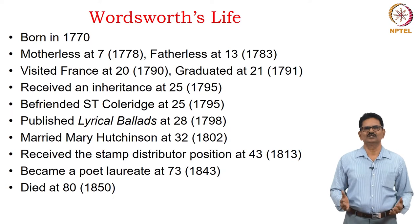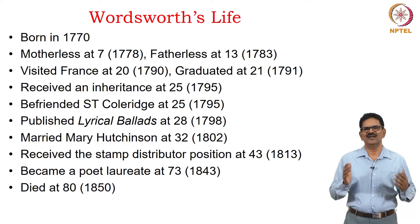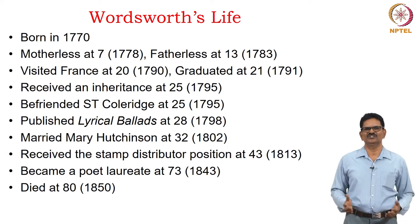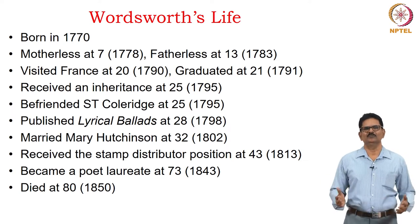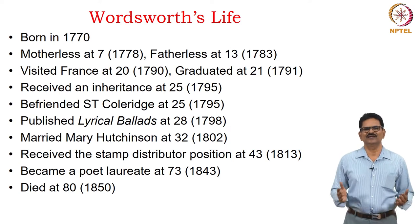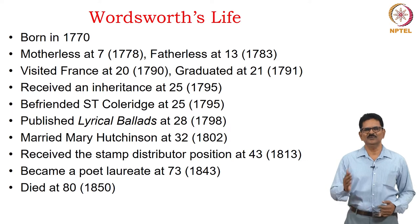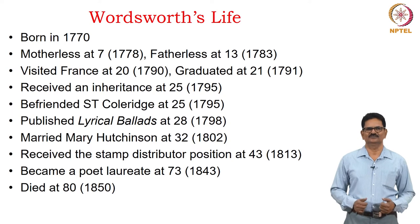Both Wordsworth and Coleridge published Lyrical Ballads in 1798, when Wordsworth was twenty-eight. He married Mary Hutchinson at thirty-two, and at forty-three obtained a position as stamp distributor. Much later, he became Poet Laureate at seventy-three and lived to the ripe age of eighty, dying in 1850. Immediately after, Lord Tennyson became Poet Laureate of England.